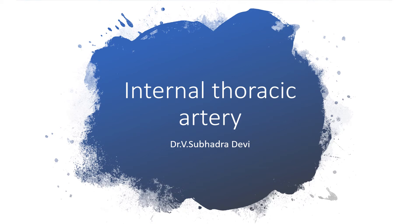Let us discuss the internal thoracic artery. The peculiarity of this artery is it originates in the lower part of the neck, traverses through the intercostal spaces, and divides in the 6th intercostal space into its terminal branches, which extend into the abdomen.